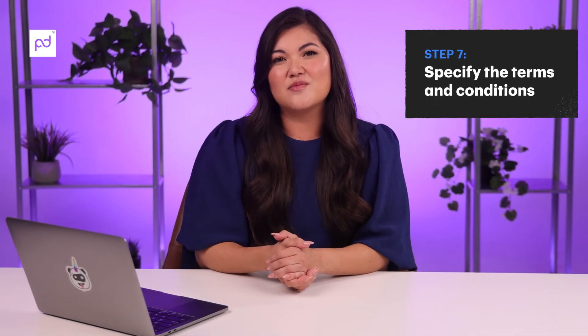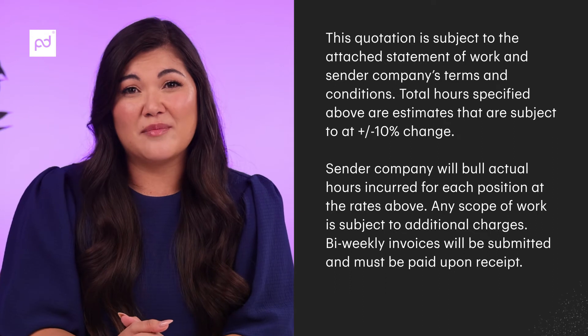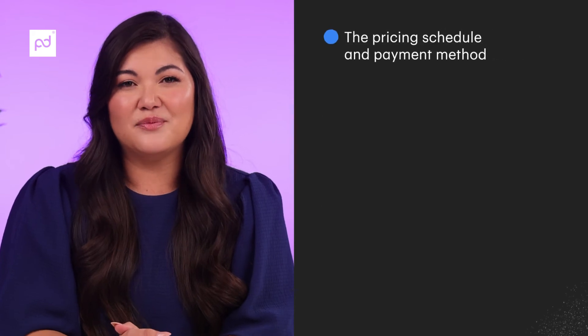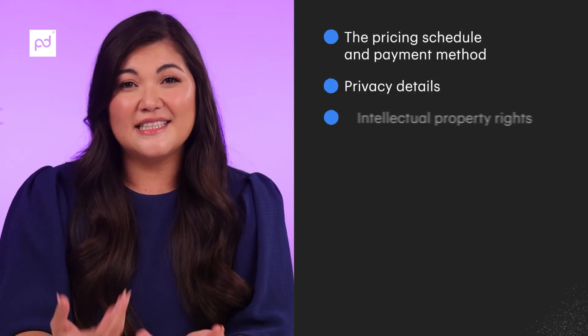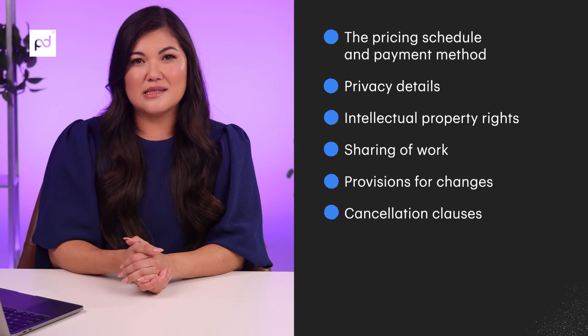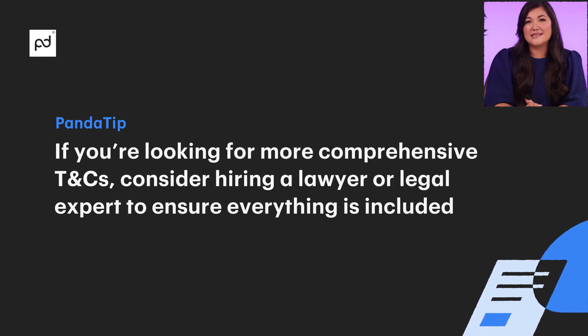Step seven: specifying the terms and conditions. The terms and conditions is where you spell out both you and your customer's responsibilities. Without terms and conditions, a quote is incomplete. In our template example, the terms and conditions are just below the pricing table. For more complex agreements, there can be additional components such as the pricing schedule and payment method, privacy details, intellectual property rights, sharing of work, provisions for changes, cancellation clauses, fees for delay or termination, and how errors or omissions will get addressed. Our Panda tip is that if you're looking for more comprehensive T&Cs, consider hiring a lawyer or legal expert to ensure everything is included.